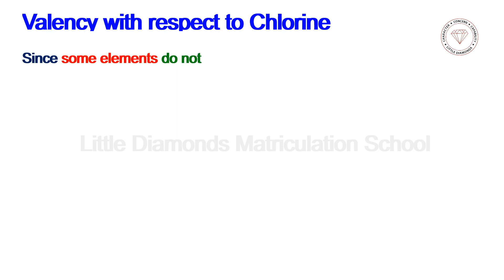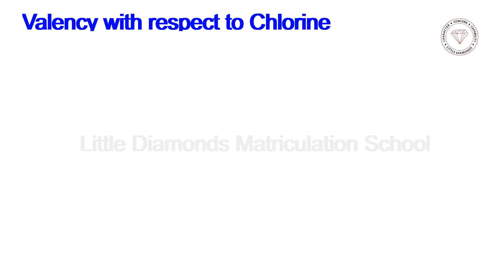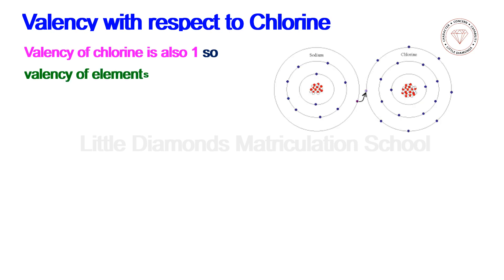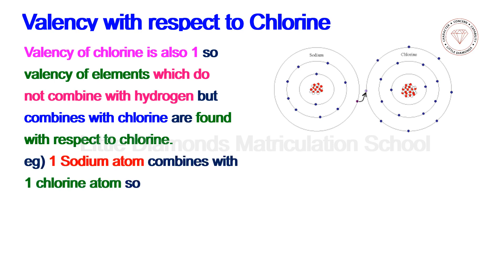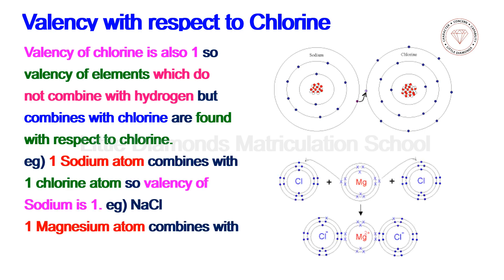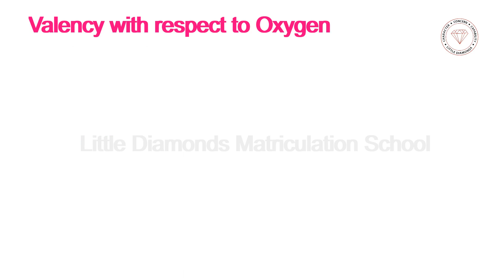Since some elements do not combine with hydrogen, their valency is defined in terms of other elements like chlorine or oxygen. Valency with respect to chlorine: the valency of chlorine is 1. So, for elements that combine with chlorine but not hydrogen, valency is found using chlorine. For example, one sodium atom combines with one chlorine atom, so valency of sodium is 1. One magnesium atom combines with two chlorine atoms in MgCl₂, so its valency is 2.